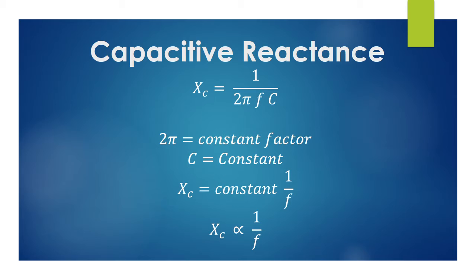Mathematically, XC = 1 / (2πFC). Here, 2π is a constant factor and C is a fixed value capacitor, so C is also constant. With 2π and C constant, we get the relation: XC is proportional to 1/F. This means XC is inversely proportional to F. So if we increase the frequency, the capacitive reactance will decrease; and if we decrease the frequency, the capacitive reactance will increase.